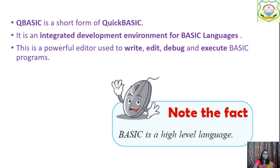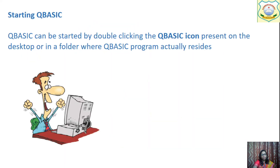Which type of language is BASIC? BASIC is a high-level language. There are two types of computer programming languages — low-level language and high-level language. BASIC is a high-level language.